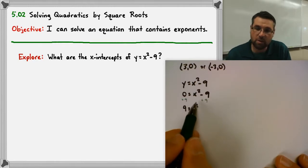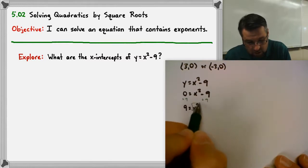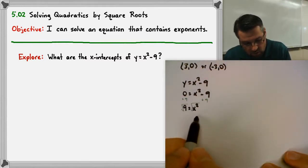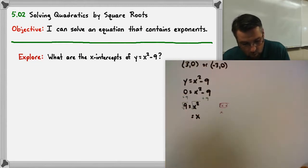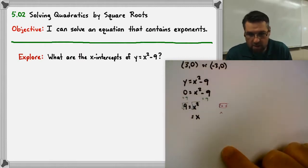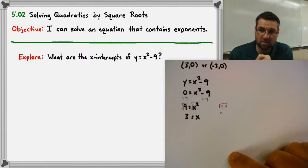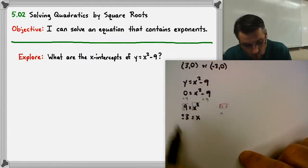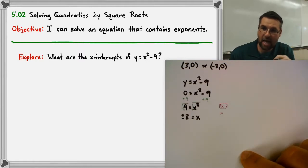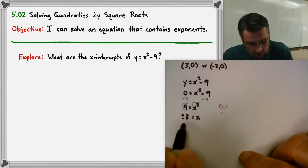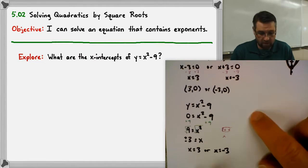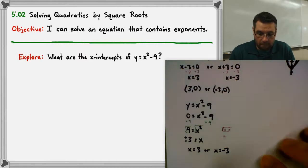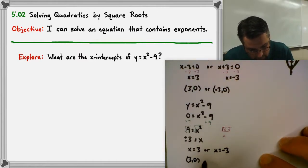To solve for x, we get rid of the square by taking the square root — inverse operations. The square root of x squared is just x, since x squared is x times x and we pull one x out. On the other side, the square root of nine gives plus or minus three, because positive three squared is nine and negative three squared is also nine. So x equals three or x equals negative three — the same results as factoring, written as x-intercepts: three comma zero and negative three comma zero.